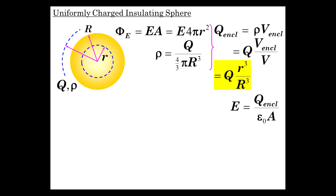So now E is Q enclosed over epsilon 0 A. That's our basic way of simplifying down Gauss's law to find the E field. So for R bigger than R and R less than R, let's check it out.